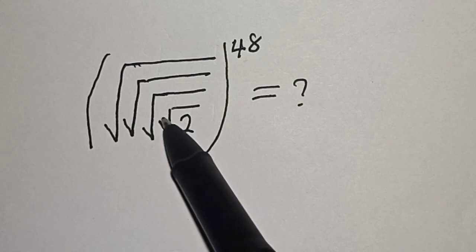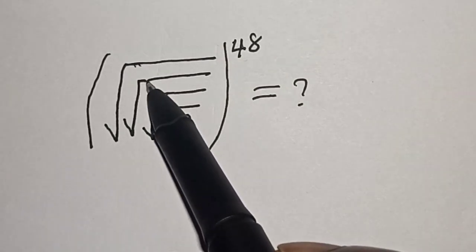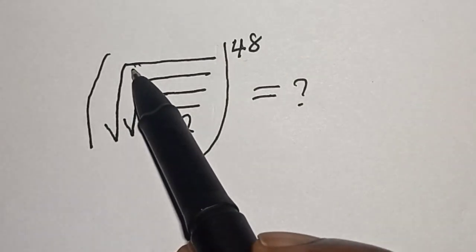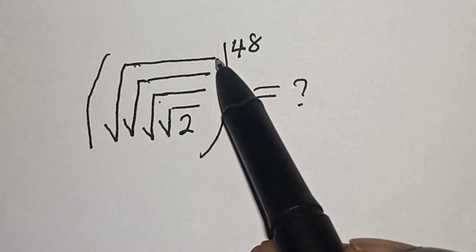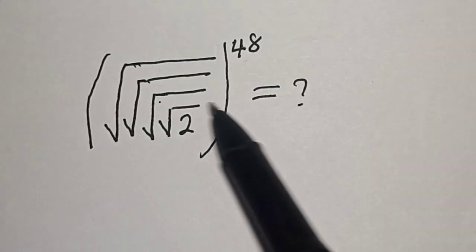Square root of 2, with another square root, another square root, and another square root, all raised to the power of 48, is equal to 4.